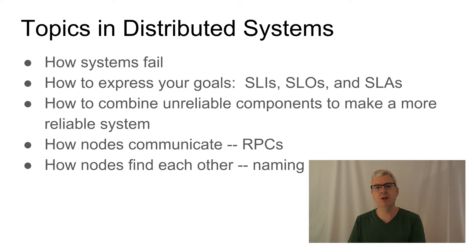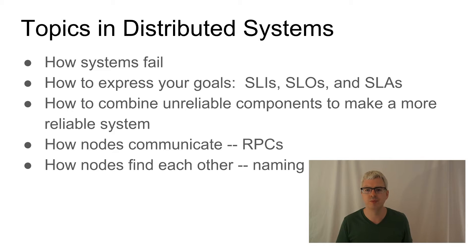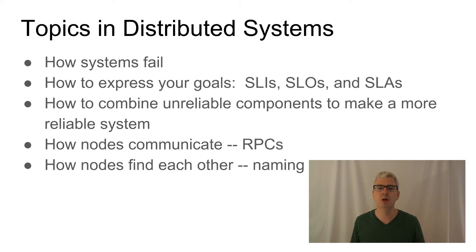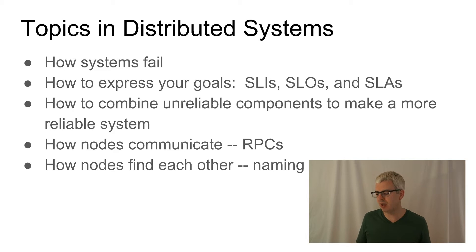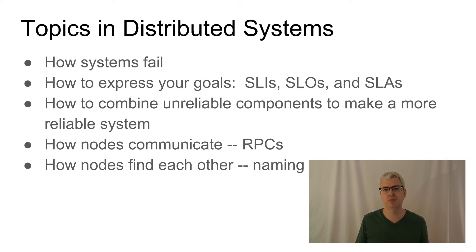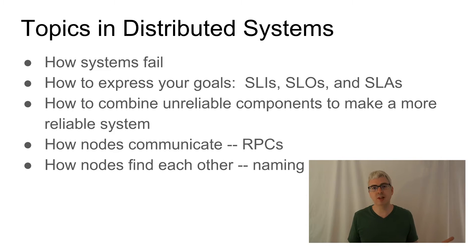The first term is SLIs — Service Level Indicators. It's what you measure when looking at a system to understand how well it's performing. Once you have chosen a set of SLIs and a technique for measuring them, you want to develop your SLOs — Service Level Objectives — which define how good you want those SLIs to be. For example, an SLO might be: I want my website to respond to browser requests 99% of the time as measured over a one-hour interval.